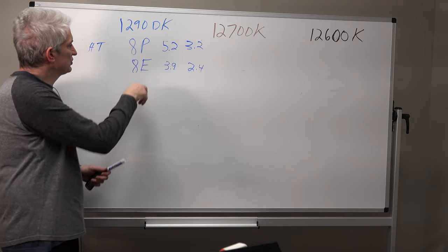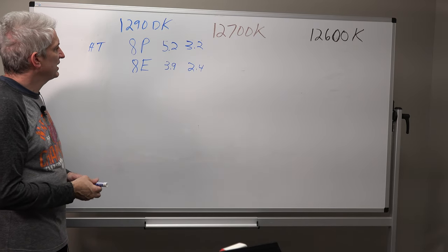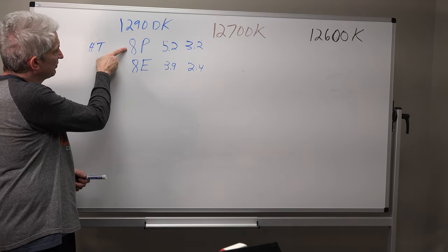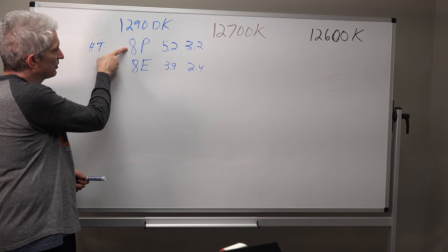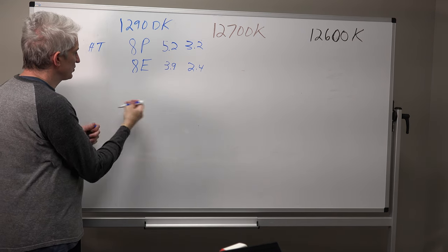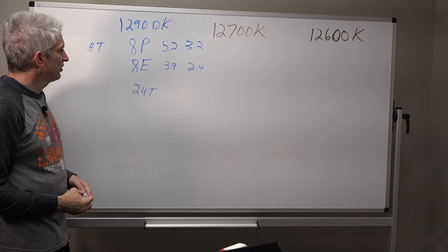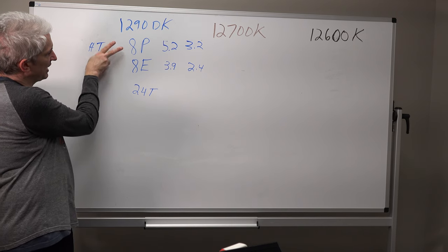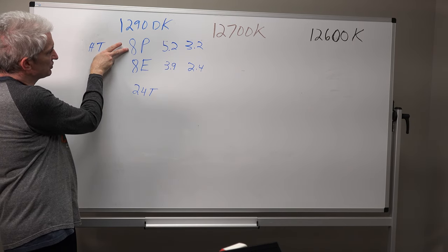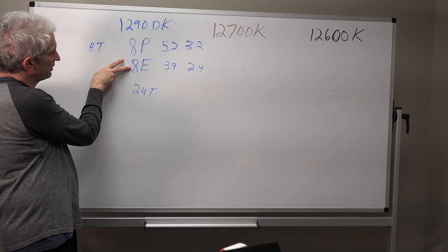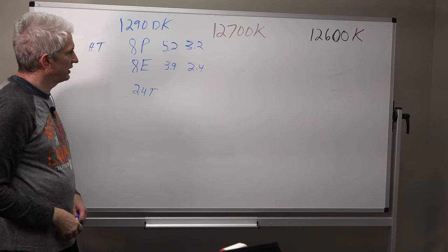So here we have a total of, let's count up our threads. We have 16 threads here because we have eight with hyper threading plus another eight. So we have 24 threads. And again, eight cores with hyper threading gives you 16 plus another eight gives you 24 threads.